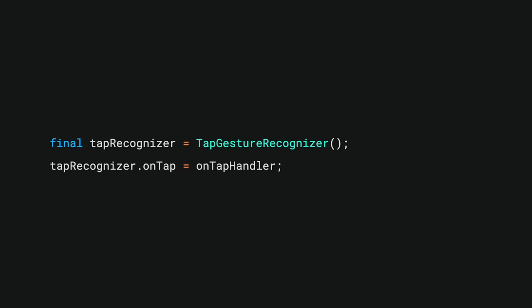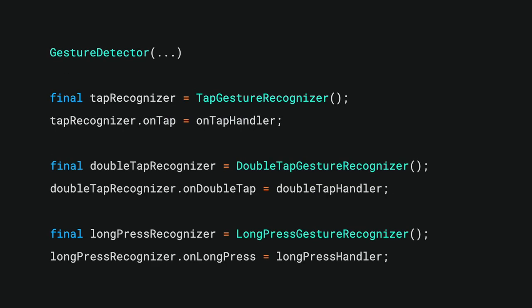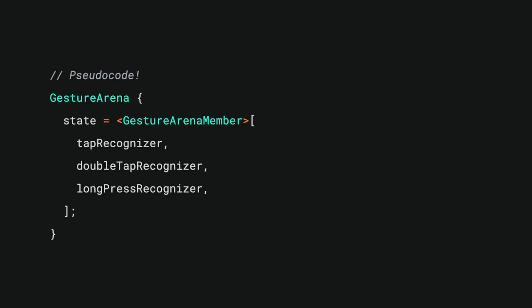The gesture arena is where competing ideas about what the user is up to battle it out in a winner-takes-all fight to the death. This summer: one user, one gesture, multiple recognizers — who will survive? Gesture Arena, coming to a mobile app near you. Remember how specific gesture callbacks get attached to recognizers? Our gesture detector has three families of gestures to consider: tap, double tap, and long press — so it would create three distinct recognizers. Then when a fresh event comes in, all three are admitted into the arena for hardcore gladiatorial action.